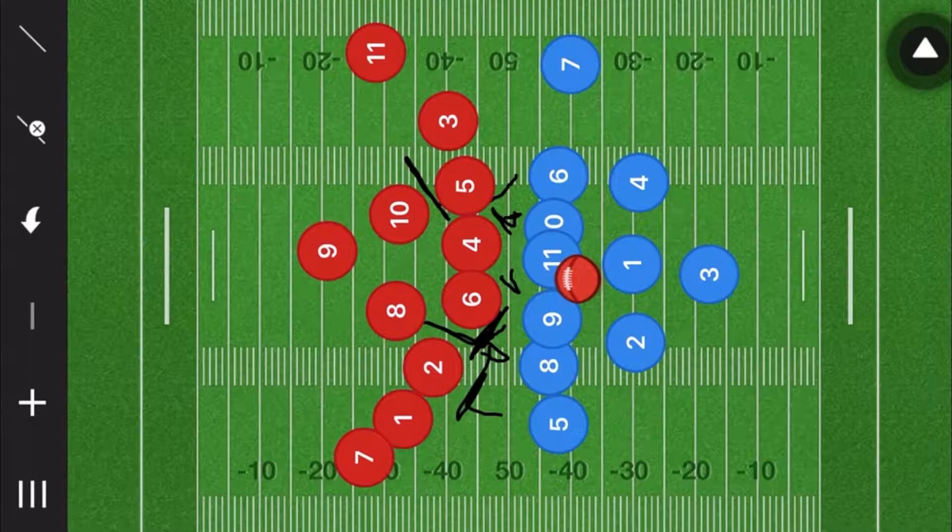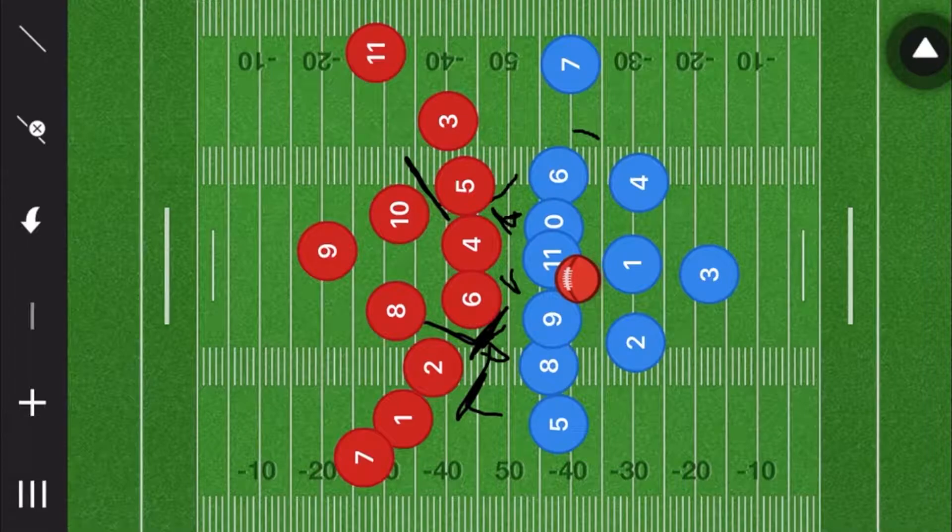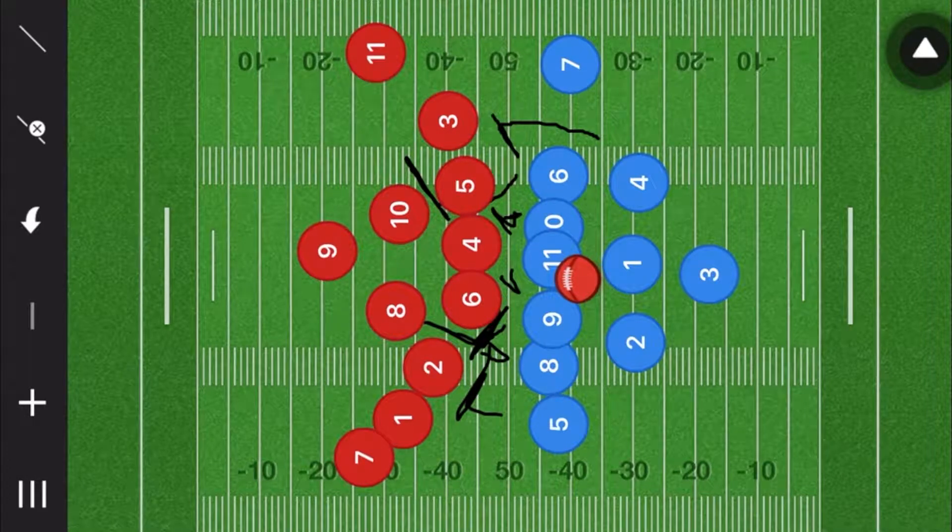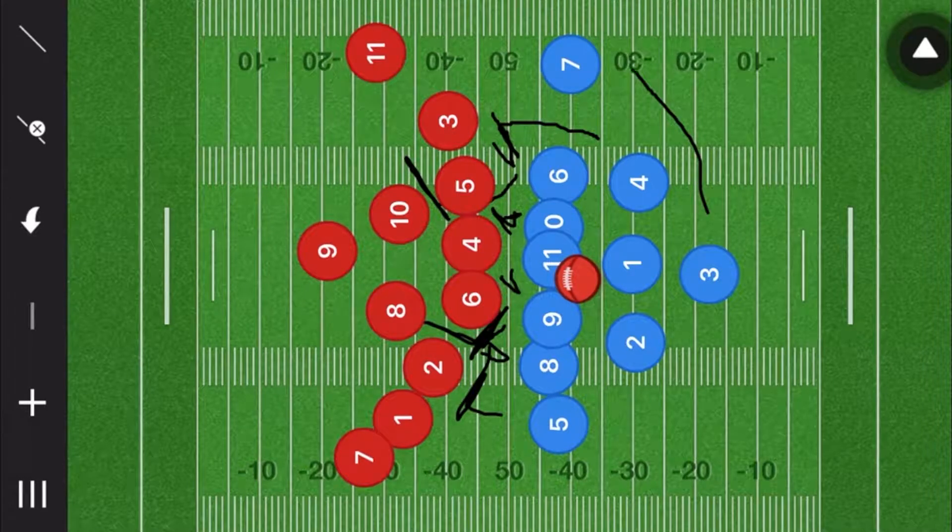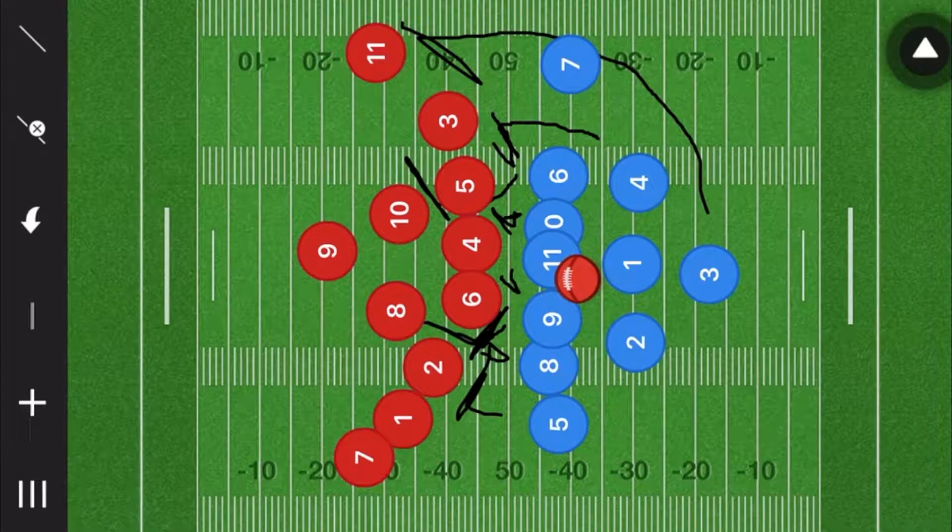Next on this side—well, this is a running play—we have player four blocking up here, most likely blocking player five. Then we're going to have player three running up and blocking player 11. Player nine, he's not blocking anybody.